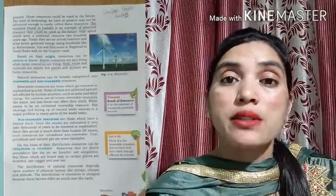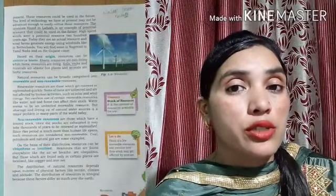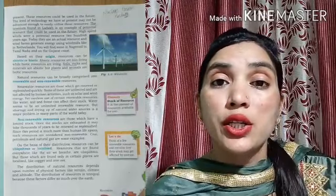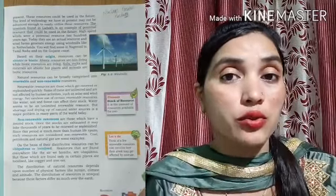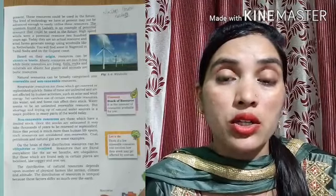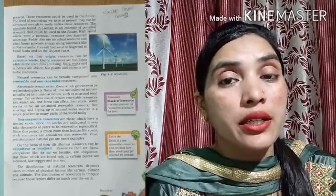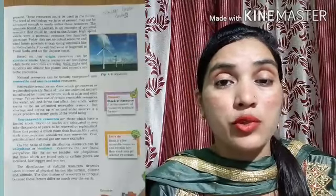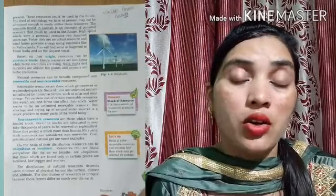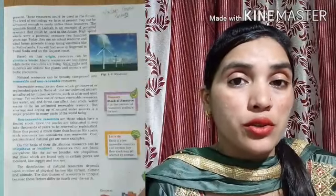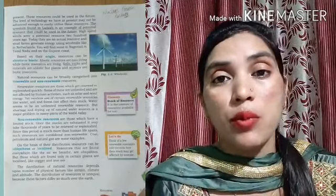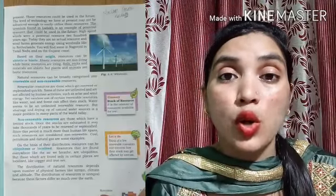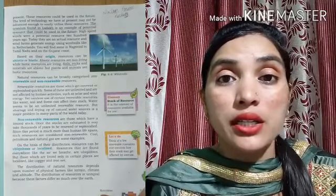Next is on the basis of stock — there are two types: renewable resources and non-renewable resources. Renewable resources are those that can be renewed quickly and their stock is unlimited — we can use them again and again. For example, air and sunlight continuously renew themselves. Non-renewable resources have a limited stock. Once exhausted, they take a very long time to form again, so we cannot use them again and again.